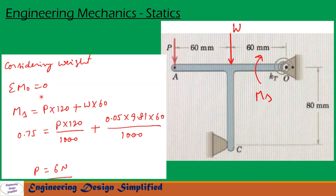Sigma M_O equals 0. The spring moment M_S equals P times 120 plus W times 60, so M_S = P × 120 + W × 60. After substituting the values and simplifying, we get P equal to 6 N. This is the load P required to break the contact at C when weight W is considered.